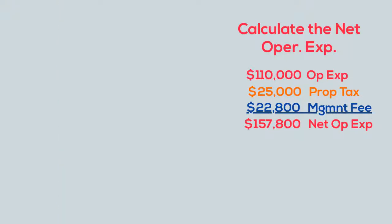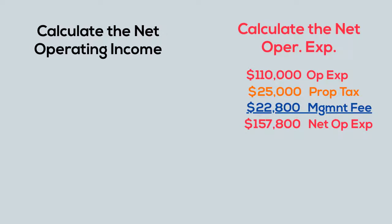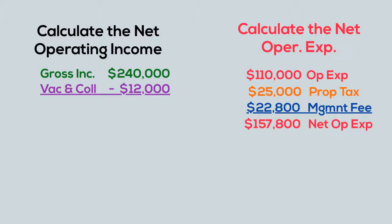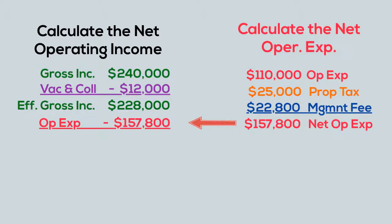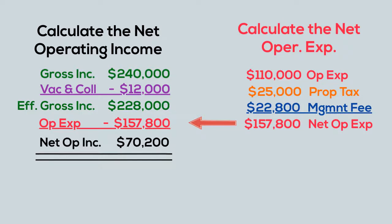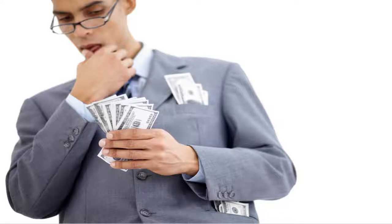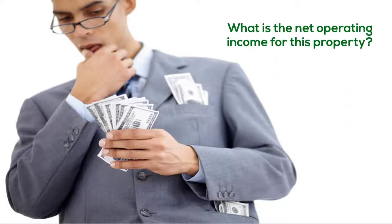Now it's time to put everything together. That's the gross income of $240,000 minus the vacancy and collection of $12,000, which gives you an effective gross income of $228,000. Then you subtract $157,800 for operating expenses to get a net operating income of $70,000. What is the net operating income for this property?